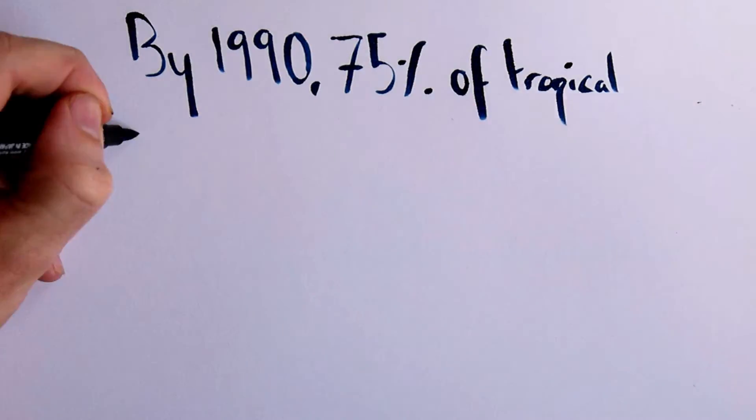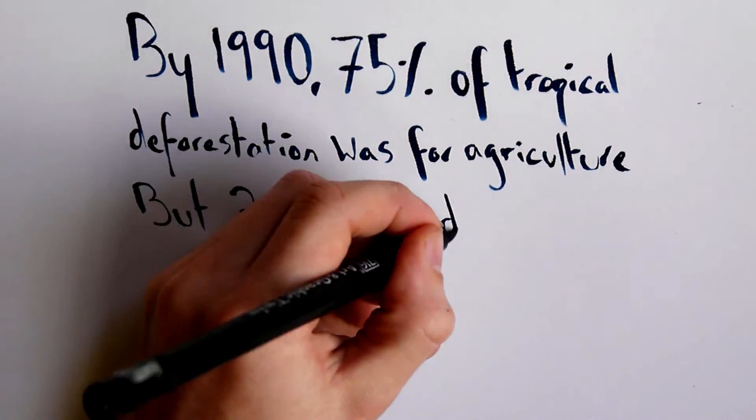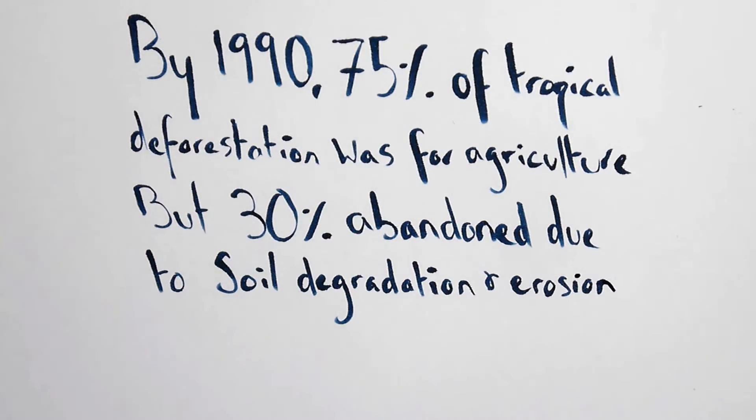This can be seen by the fact that by 1990, three-quarters of all deforested land in the Amazon was cleared for agriculture, yet a third of this had already been abandoned due to collapses in soil quality.